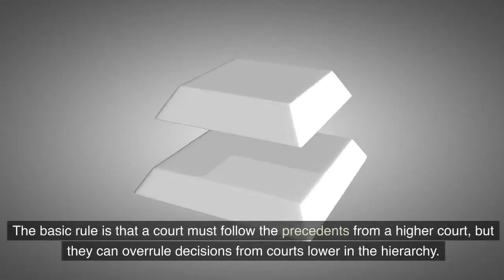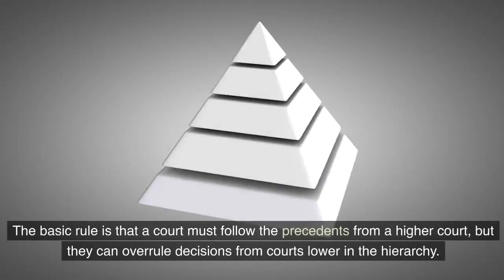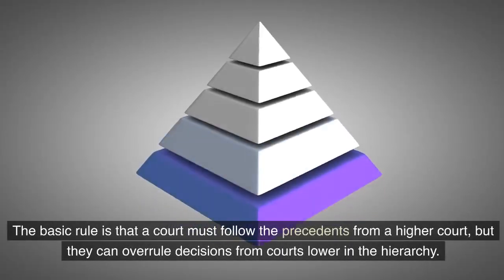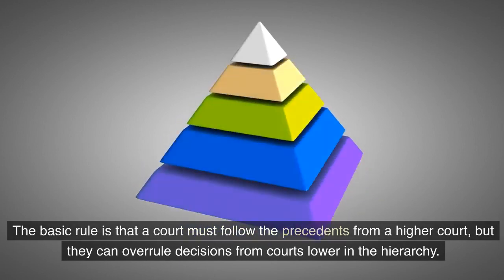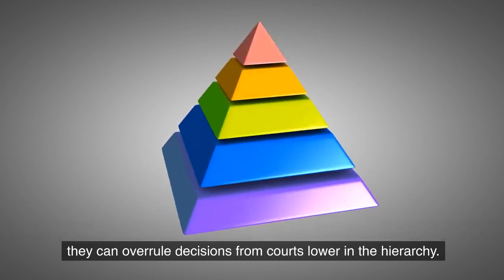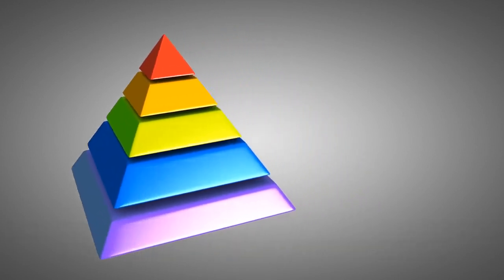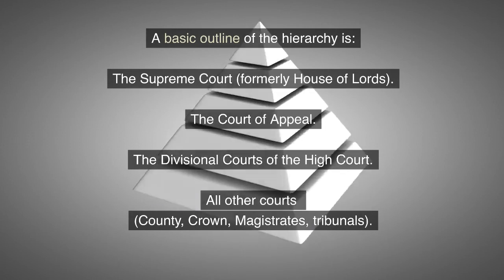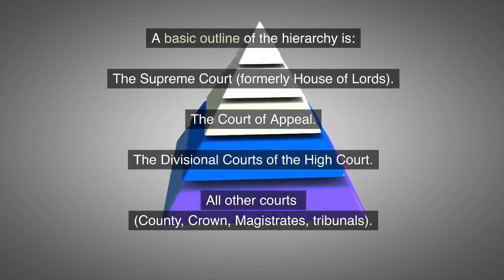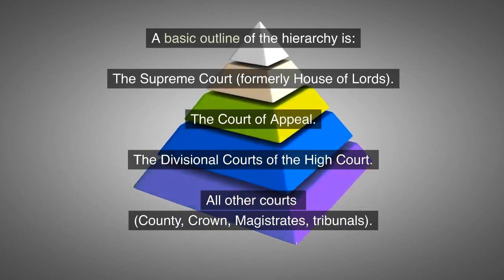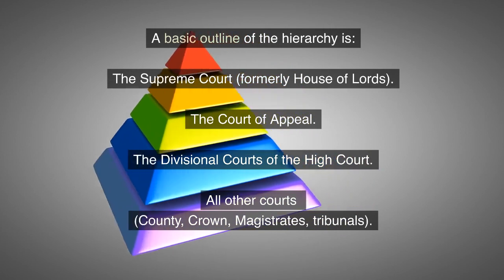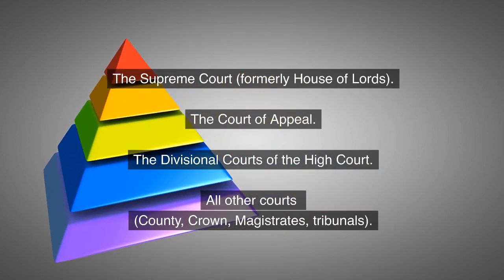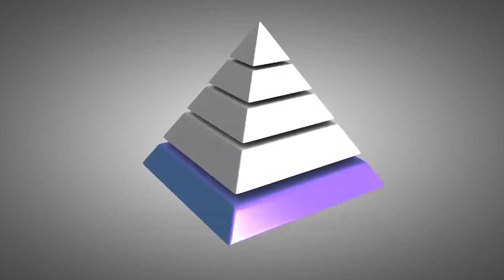The basic rule is that a court must follow the precedents from a higher court, but they can overrule decisions from courts lower in the hierarchy. A basic outline of the hierarchy is the Supreme Court (formerly House of Lords), the Court of Appeal, the divisional courts of the High Court, all other courts: county, crown, magistrates, and tribunals.